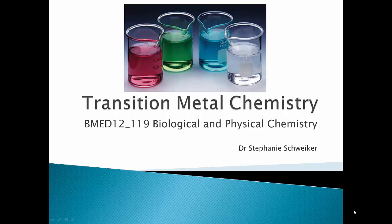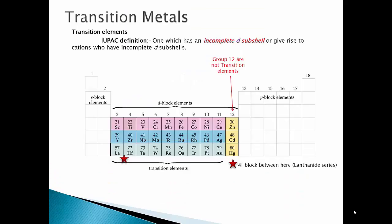Welcome to our transition metal chemistry lecture. My name is Stephanie and we'll be going through the lecture slowly today. Transition metals are our D block elements. Just as a refresher on our different blocks: we've got our S block on the left-hand side two columns, our P block on the right-hand side, and our D block in the middle. D block elements are our transition metals.